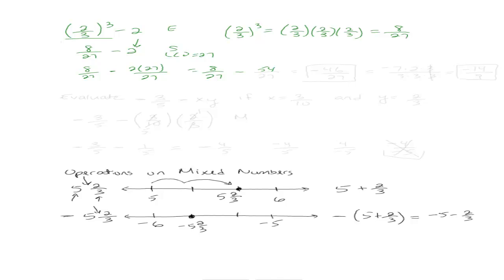2 times 27. Yeah. 54. And 8 minus 54. Negative 46 over 27. Okay. That's my final answer because I can't reduce that anymore.